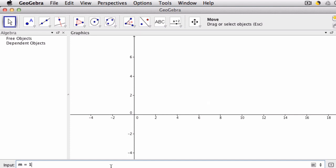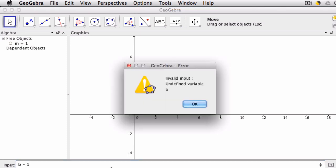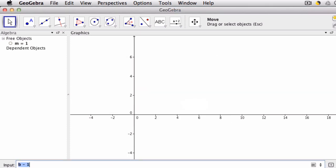m is 1, and you can have it be any number. b is equal to 1.